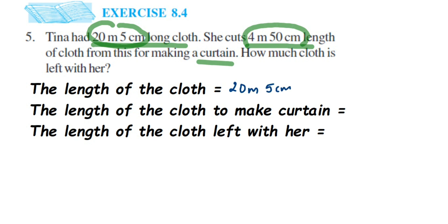We're going to write what we know from the question: the length of the cloth is 20 meter and 5 centimeter, and the length of the cloth to make a curtain is 4 meter 50 centimeter. To solve this we're going to convert everything into meters. This centimeter we're going to convert into meters. When you're converting centimeter to meter, you're converting a smaller unit to a higher unit, so you have to do division.